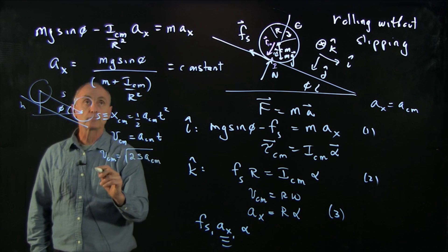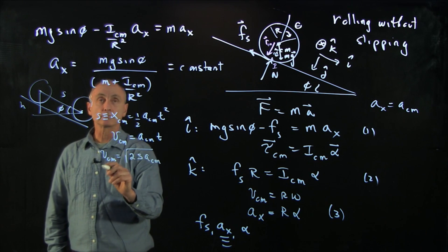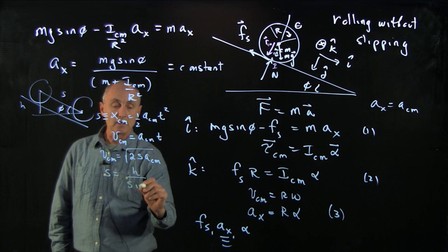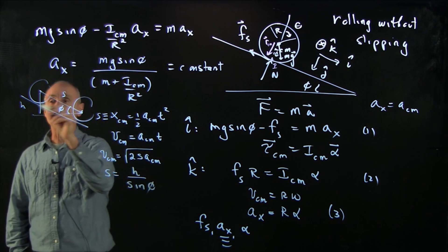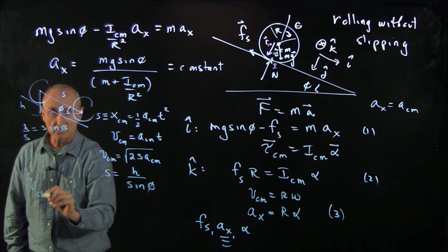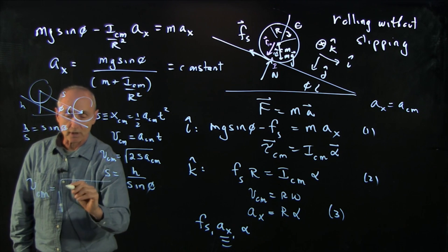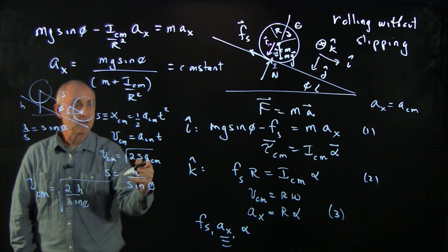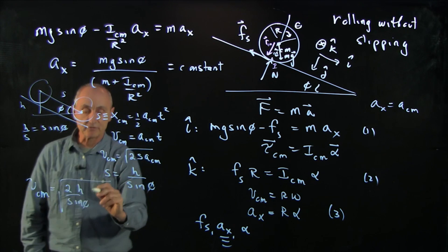Now, s is equal to h over sine phi. h over s is sine phi. And so v cm equals the square root of 2h sine phi times a cm, but we've solved for a cm,